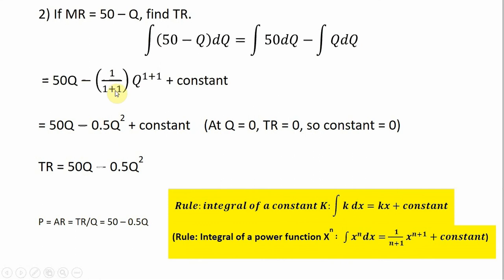Q is raised to the power of 1, so N plus 1 is 1 plus 1. Simplifying, 1 divided by 2 is just one half, and Q raised to 1 plus 1 is just Q squared. Following our boundary condition — at Q equals 0, total revenue equals 0 — we can ignore the constant. So total revenue is given by 50Q minus one half Q squared.